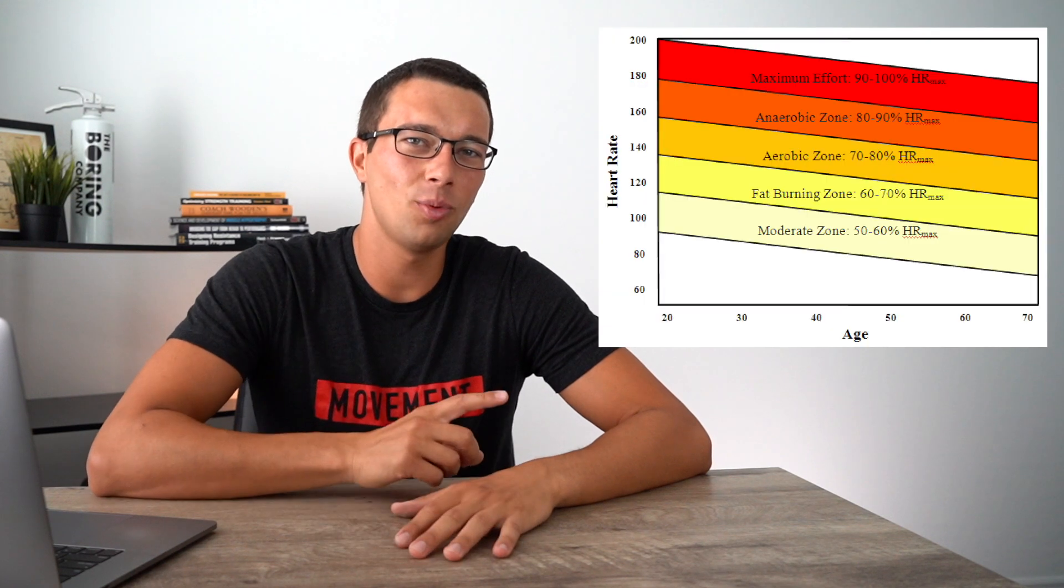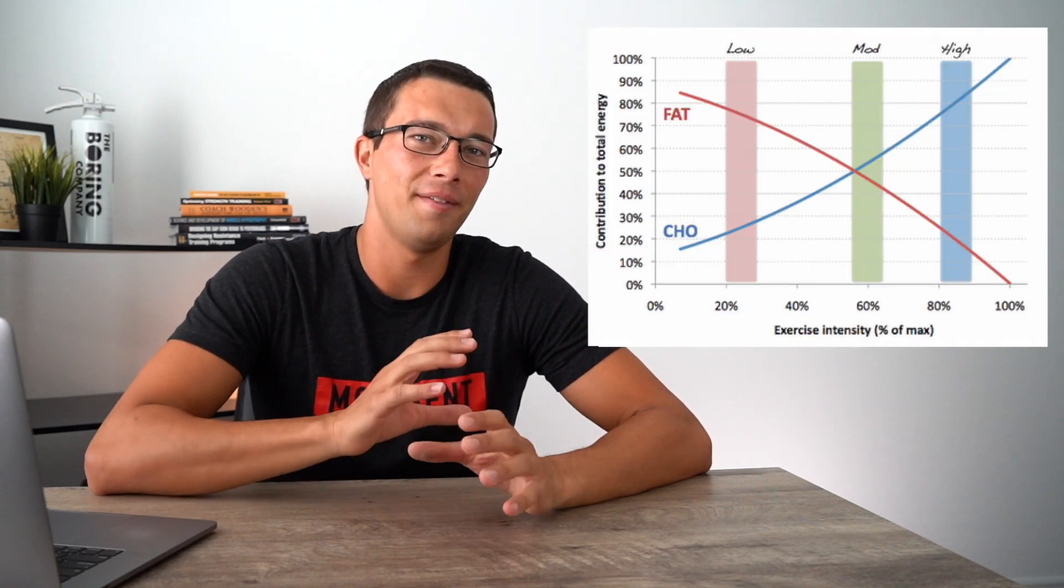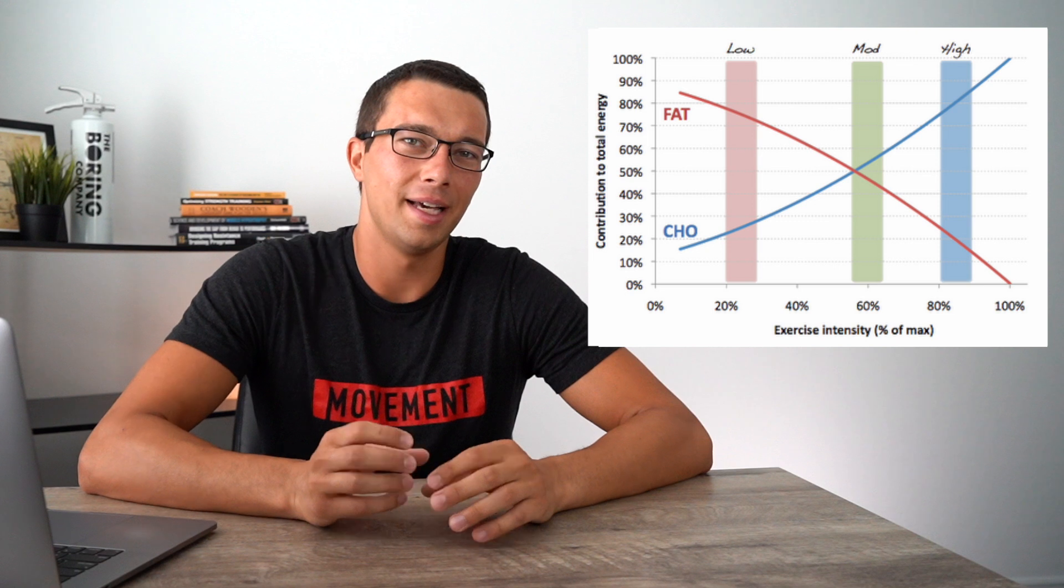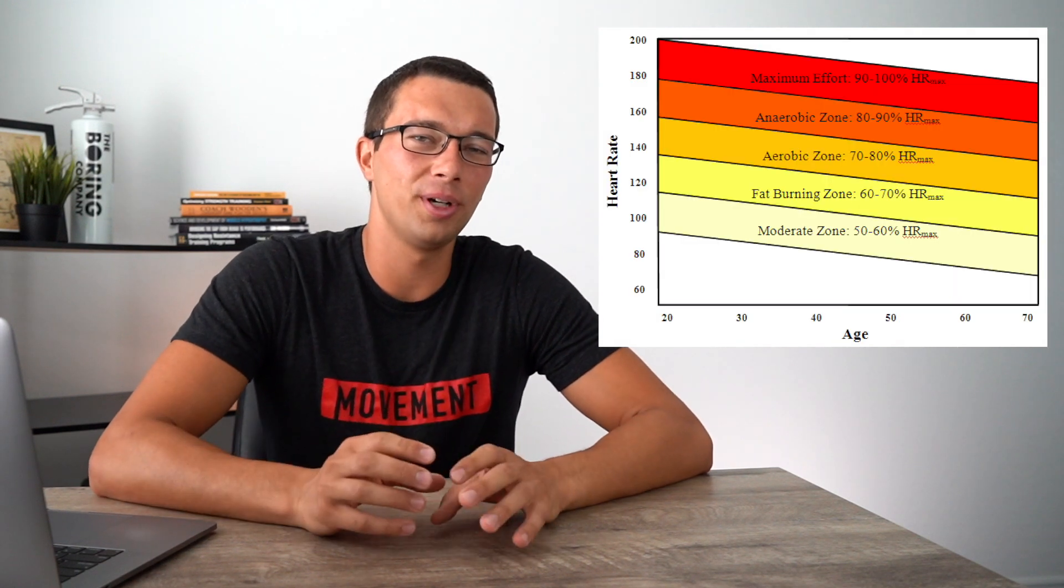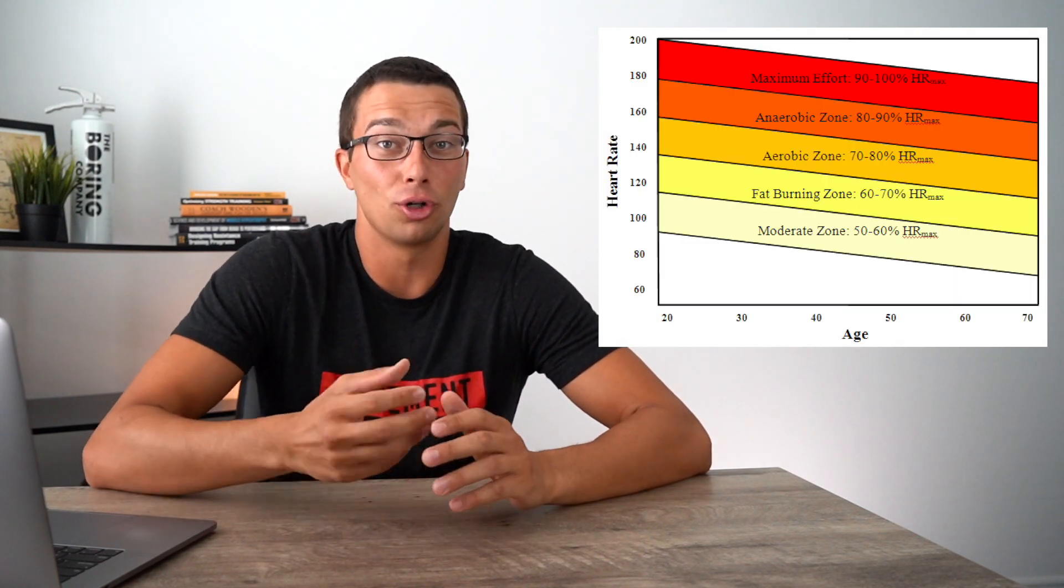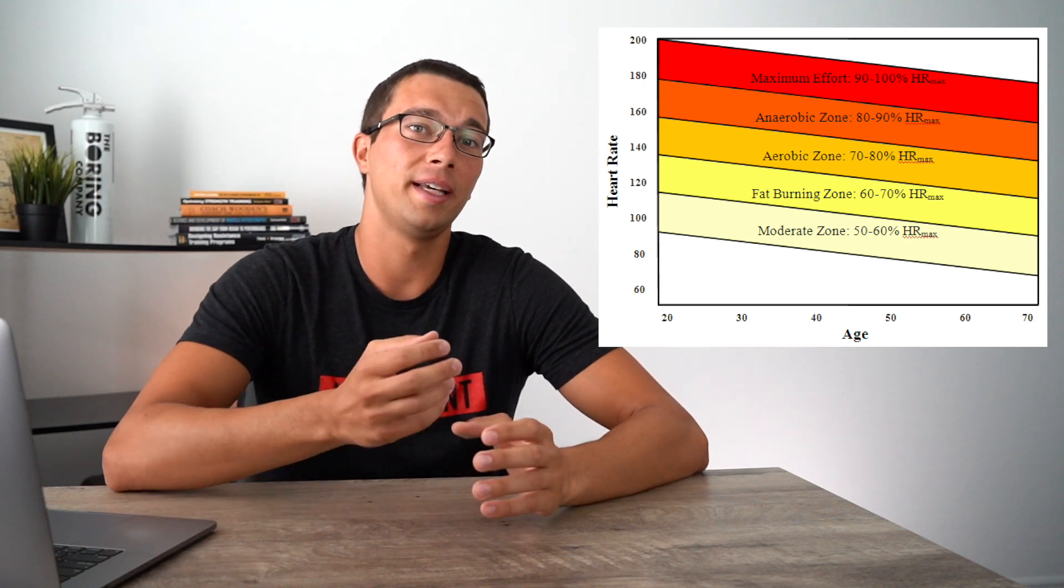So you've probably seen some graphs like this one, or like this one, which have a zone of fat burning and the theory here is that in that zone, we're burning the most amount of fat. So if our goal is fat loss, should we be working out in this fat burning zone? And there actually is some science to this, which we're gonna explore. So let's go ahead and dive into it.